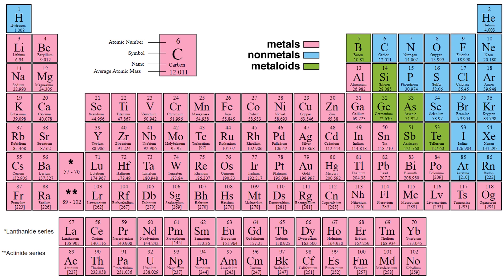To determine if an element is a metal, non-metal, or metalloid, you can refer to their location in the periodic table. The squares colored pink are the metals, the blue ones are the non-metals, and the green ones are the metalloids. Most elements are metals and are placed on the left side of the periodic table, except for hydrogen. On the right side are the non-metals, separated by a stair-like pattern of elements which are the metalloids or semi-metals.